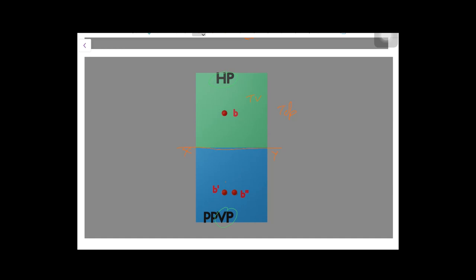The front view 'b dash' is below the XY line, in line with the top view. On the same level as the front view, we get 'b double dash', which is the left side view. In this particular case, the vertical plane and profile plane overlap each other after rotation.